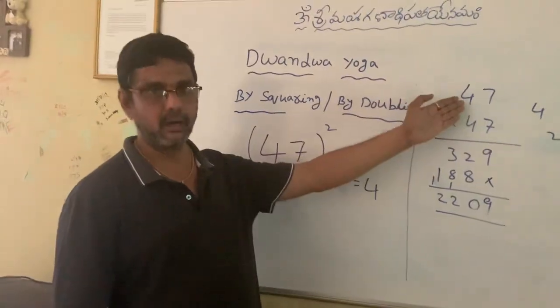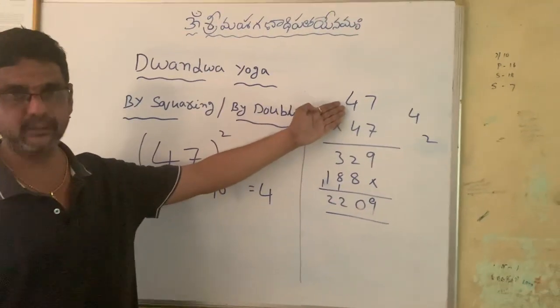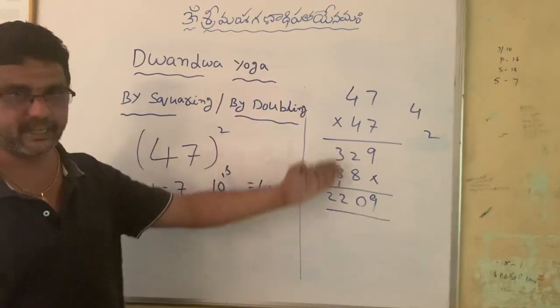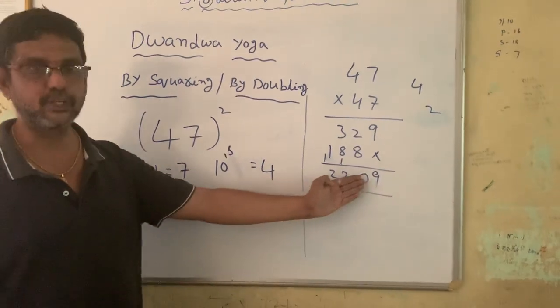I am taking a number 47 and I am doing the squaring. And this is the traditional method for that. The answer is 2209.